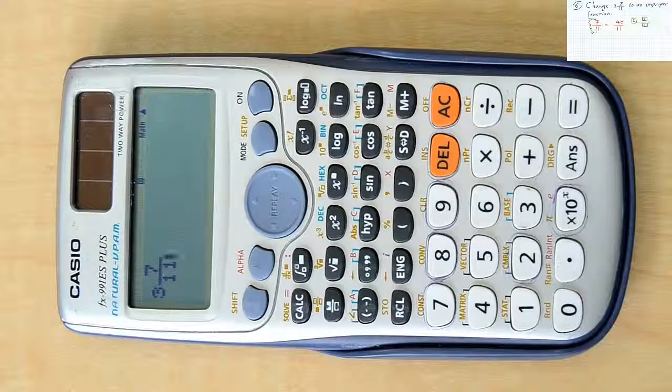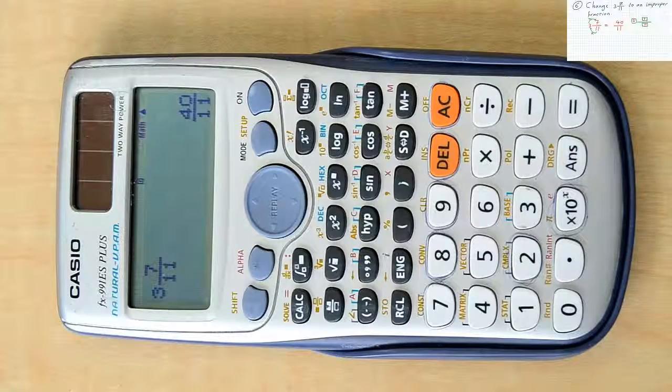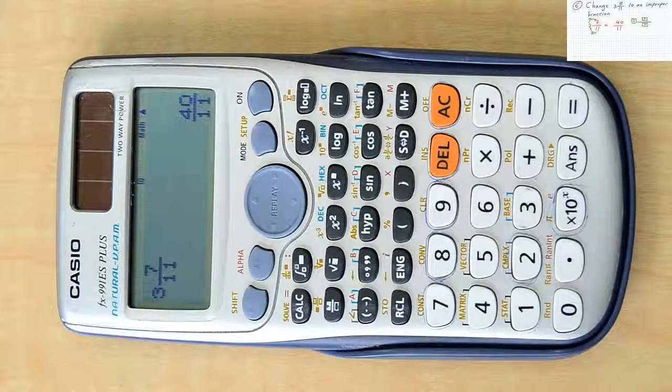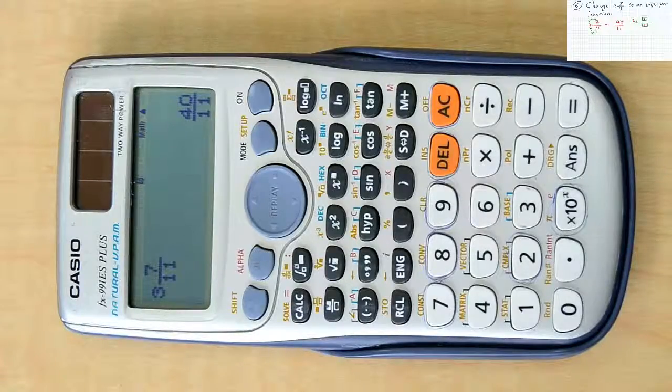After that, you can click equal, and you will have the result as 40 over 11.